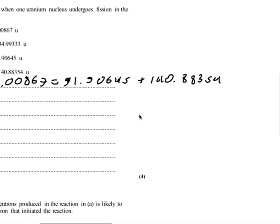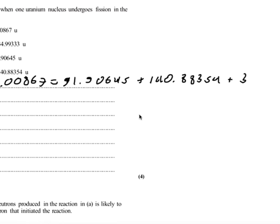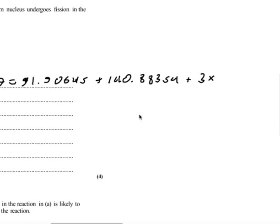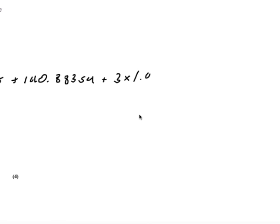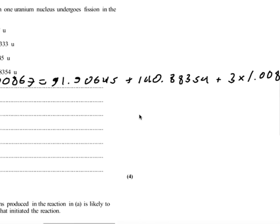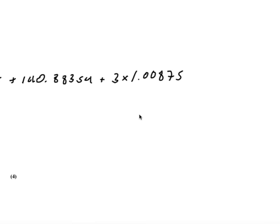And the mass of the three neutrons, 1.00867. And finally, the missing mass, the mass defect.